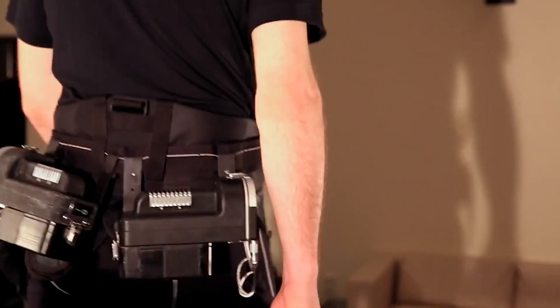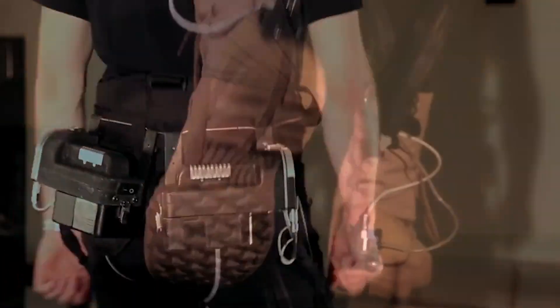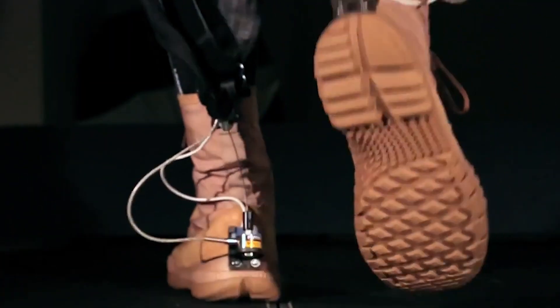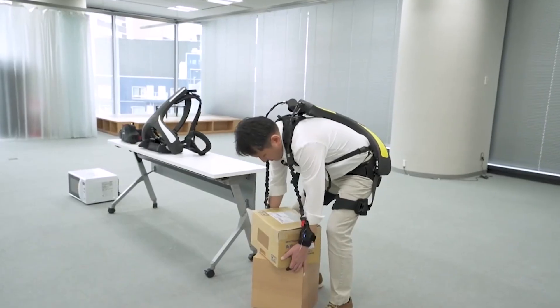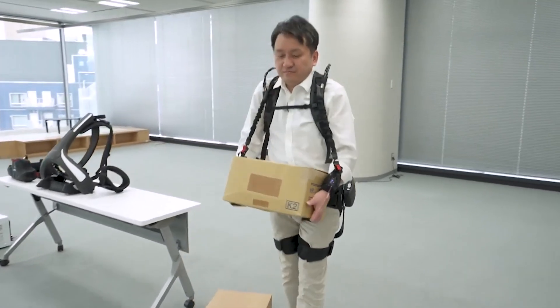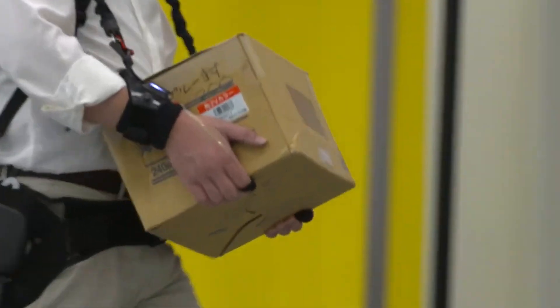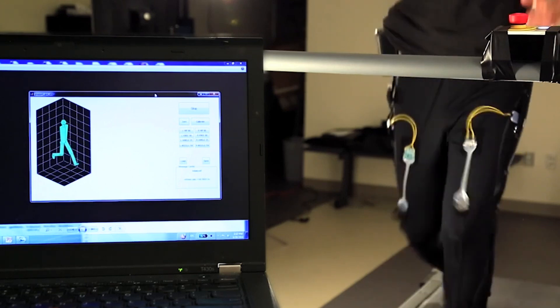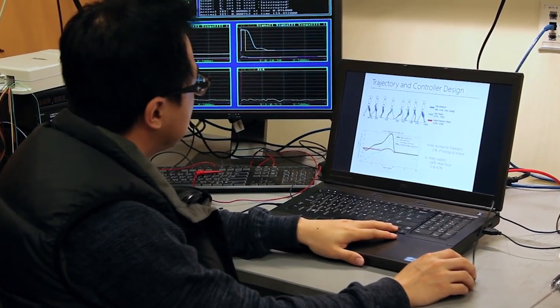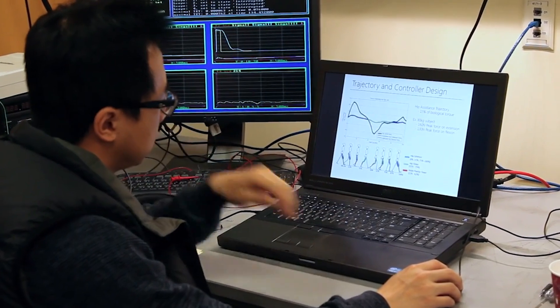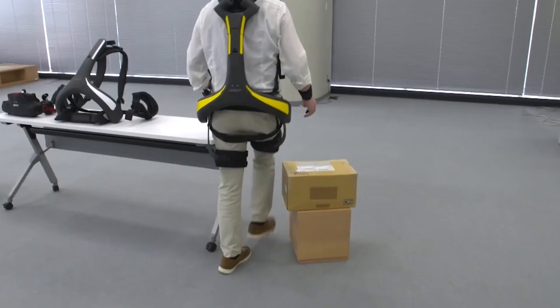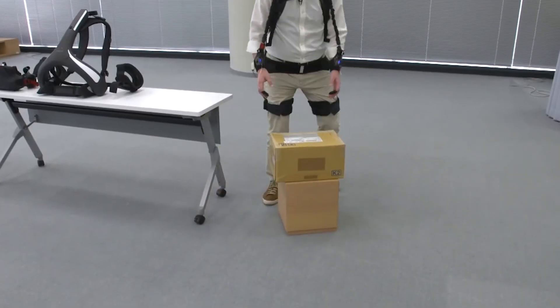Companies such as Exobionics and Rewalk are pioneering this technology, designing exoskeletons that can be worn comfortably for hours. The suits work by detecting user movements and providing powered assistance to mimic natural body motion. As exoskeletons become more advanced and accessible, we might soon see a world where manual labor is redefined and the limits of human endurance are extended, making physical tasks easier and more efficient for all.